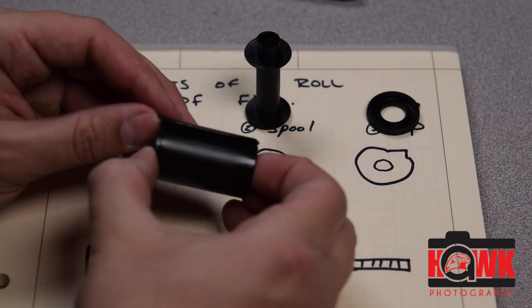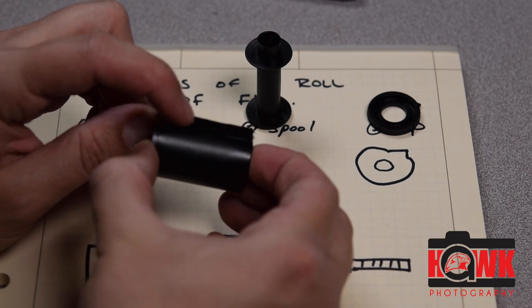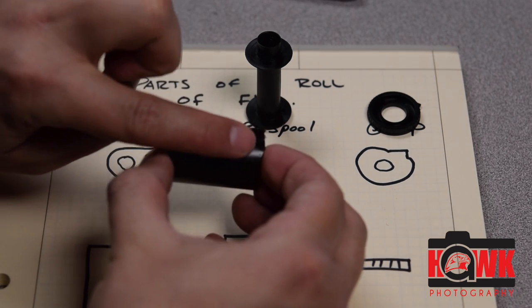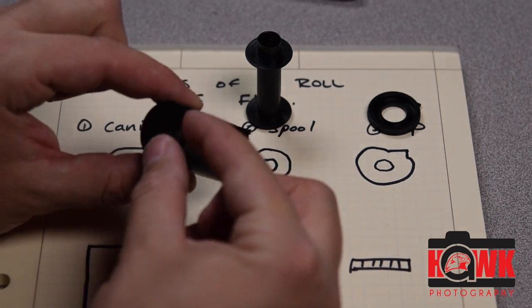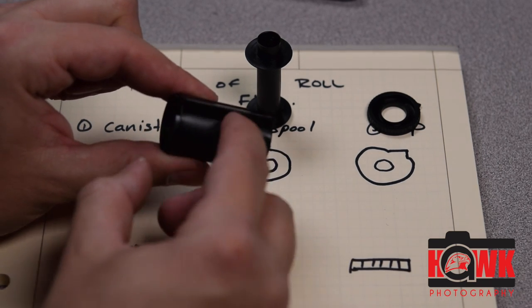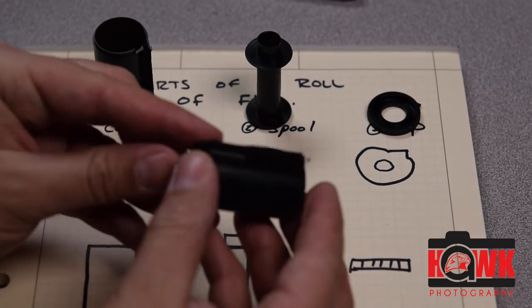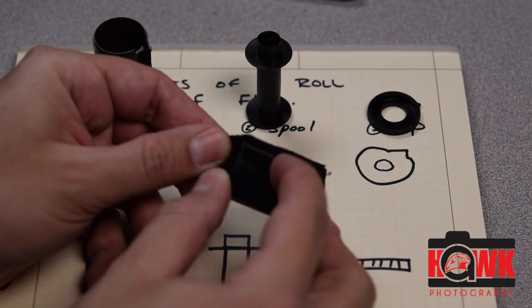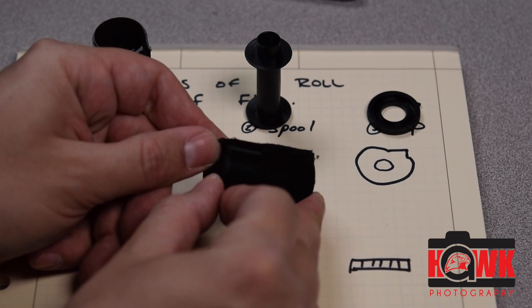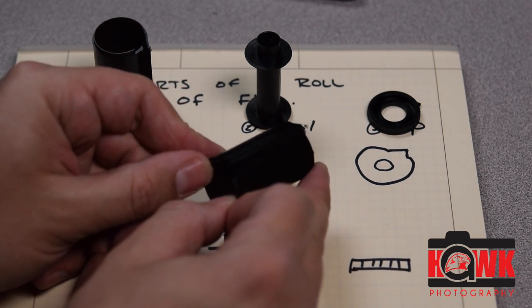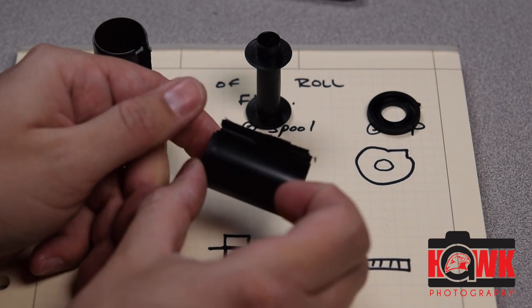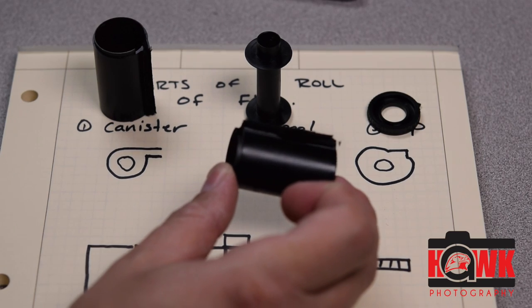So the first thing I do when I grab one of these is I do a little visual inspection of this right here. Make sure that those strips are intact and nice and straight. Occasionally I'll find one that looks like this, where the felt has been torn, folded out of the way, ripped. I would reject this one, throw it away.